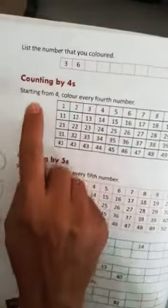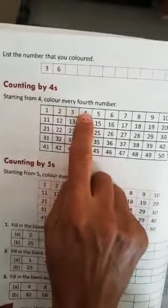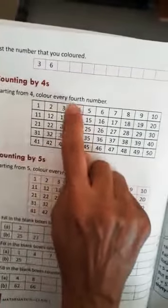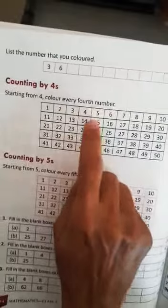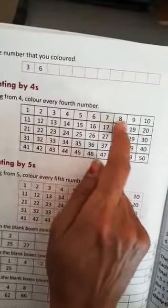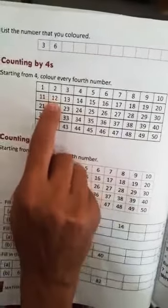Skip counting by 4's. You will start from 4. Then you will color every fourth number. 1, 2, 3, 4. Here 8. 1, 2, 3, 4. Fourth number you will color. Same as the pattern will be here for skip counting by 5's.